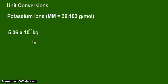And as we have previously calculated in other videos, the mass of potassium ions in the Earth's ocean is known to be 5.06 times 10 to the 17 kilograms.